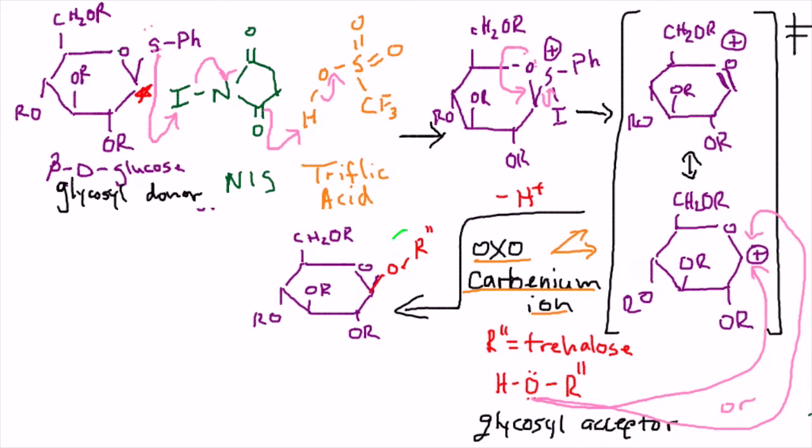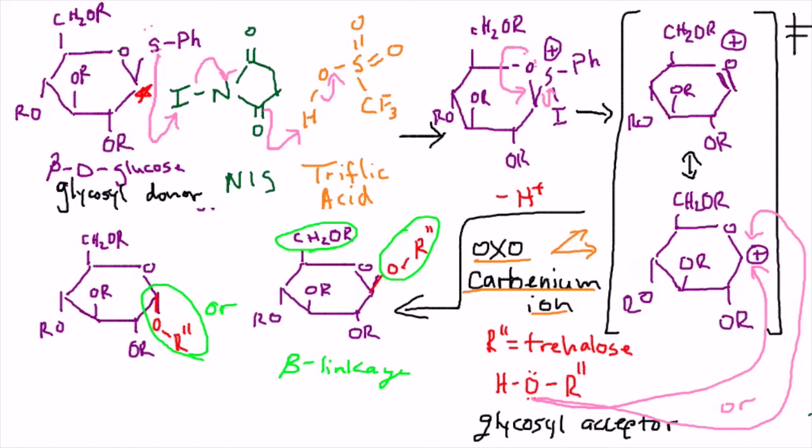Once this attack occurs, and once our nucleophilic hydroxyl group drops a hydrogen atom, we're going to have one of our products. Notice that the bond is on the same side as that C5 group, thereby giving us a beta linkage. We'll have another product wherein the bond is on the opposite side of that C5 group, thereby giving us, you guessed it, the alpha linkage.